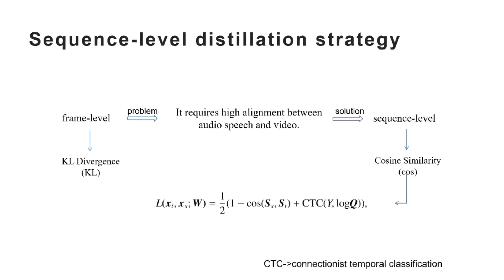For frame-level distillation, it requires high alignment between different modality data. Cosine similarity can be used to pay attention to the consistency of the two vector directions as an auxiliary loss function of CTC.